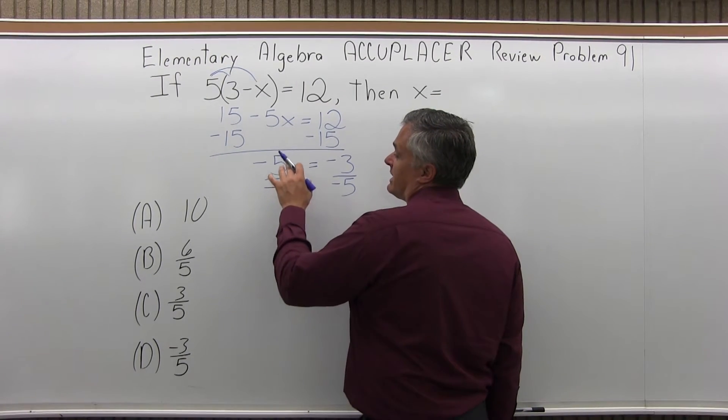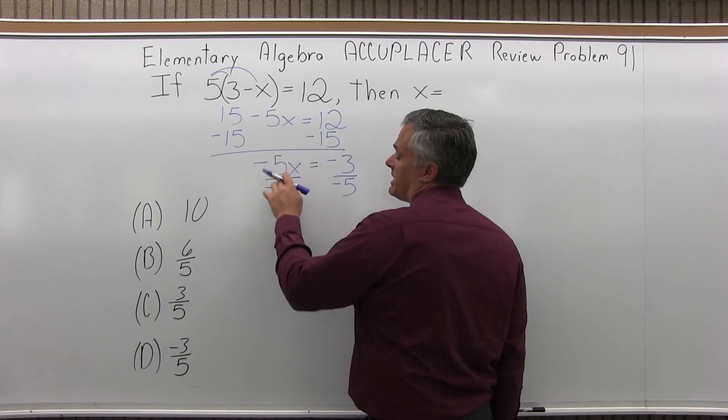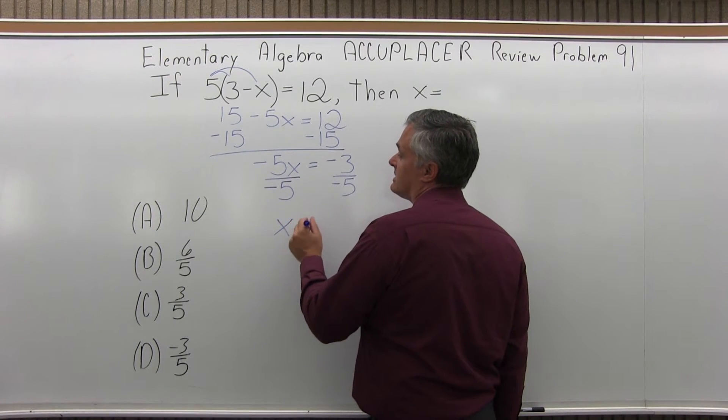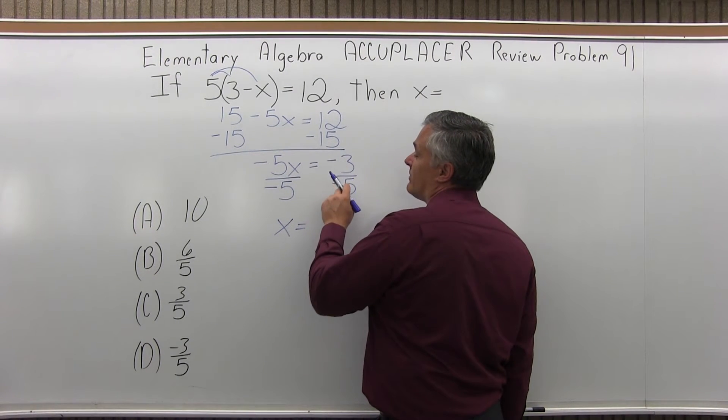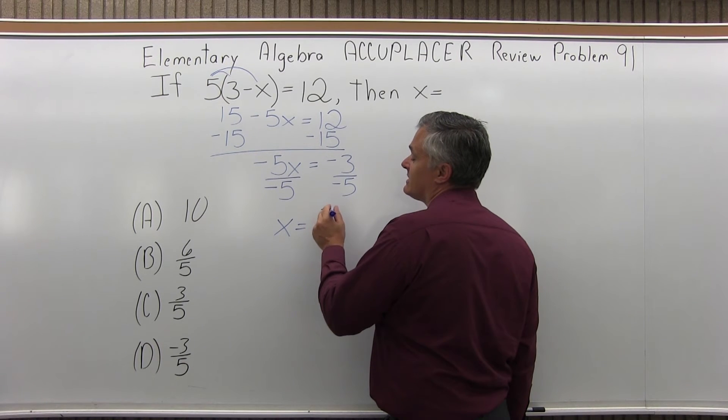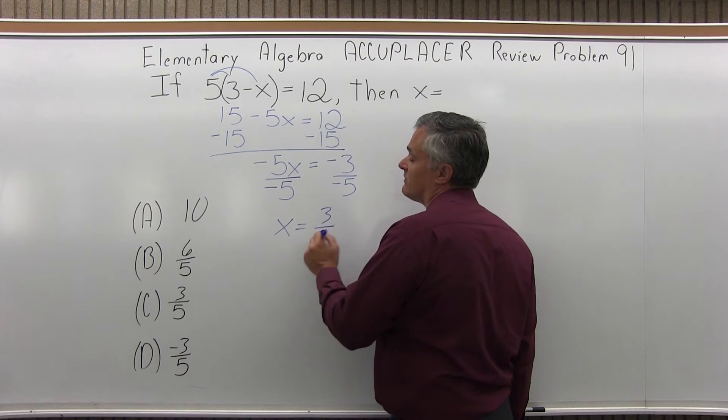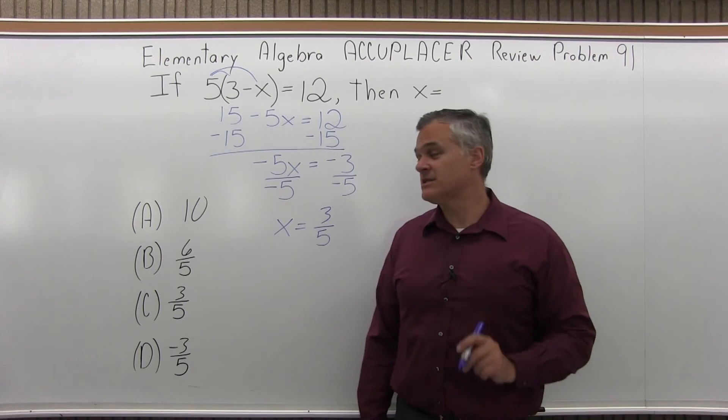So on the left side of the equals, I have minus 5x over minus 5. The minus 5 is canceled, leaving me with x. And on the right side, negative 3 over negative 5. The negatives cancel, but the 3 fifths doesn't really reduce any further than that. So I get x is 3 fifths.